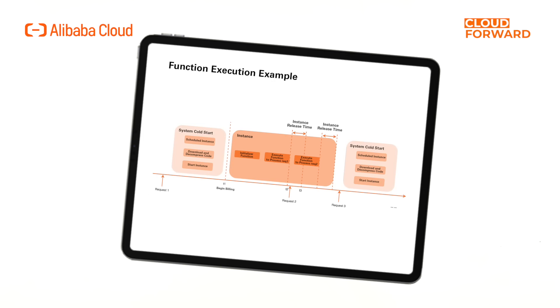Let's take a look at the execution process of Function Compute. As shown in the figure, when a function is called for the first time, Function Compute needs to dynamically schedule an instance, download and decompress the code, and start the instance to obtain a code environment that can execute the function. Only then does it actually execute the user's initialization function and the business logic on the allocated instance. This process of scheduling and starting an instance is known as the cold start process.